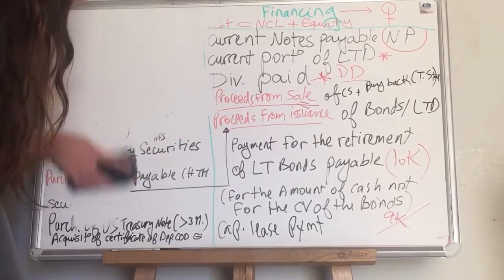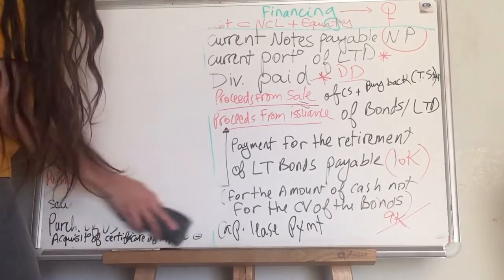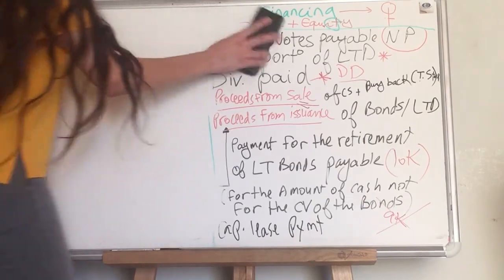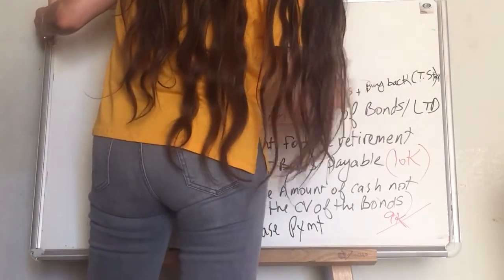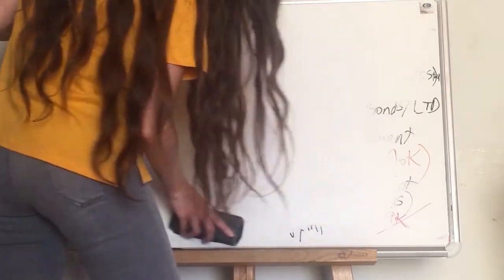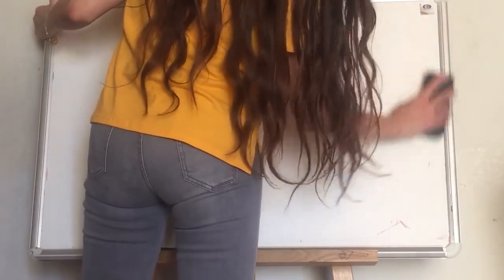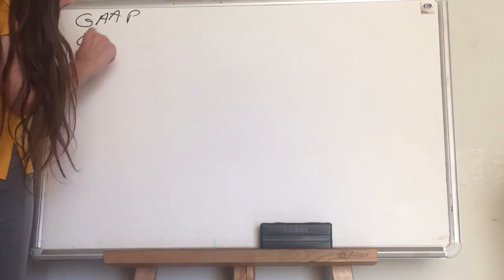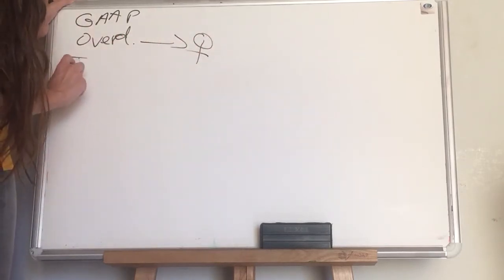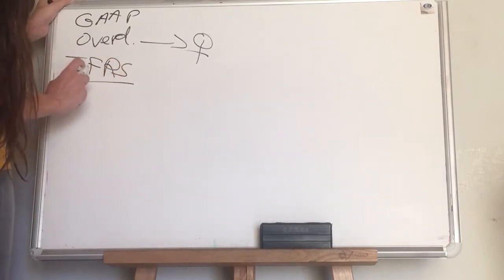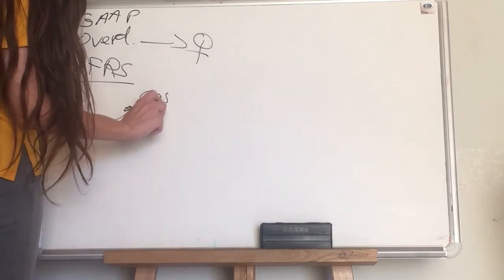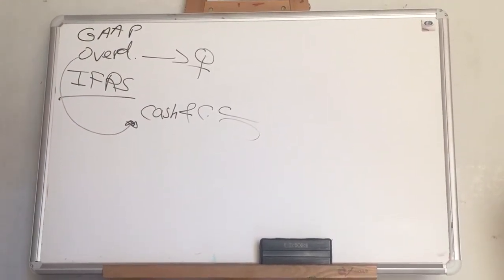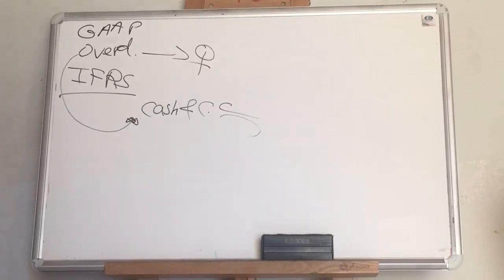What about overdraft accounts? Under US GAAP, overdraft accounts are reported under the financing section. So if the problem follows US GAAP standards, report the overdraft under the financing section. But under IFRS, overdrafts are considered part of cash and cash equivalents.